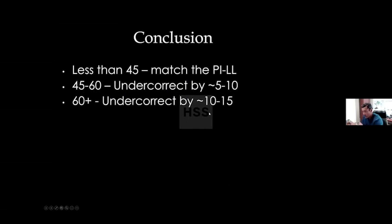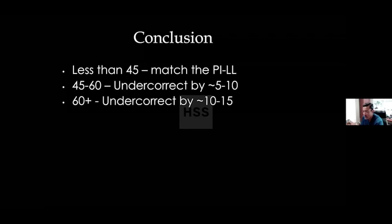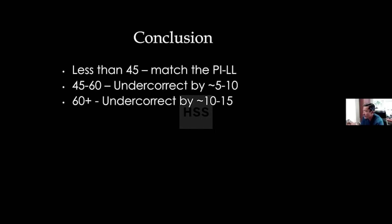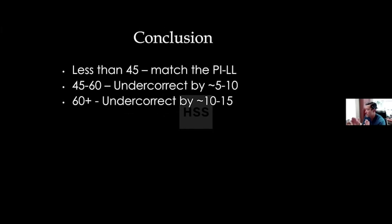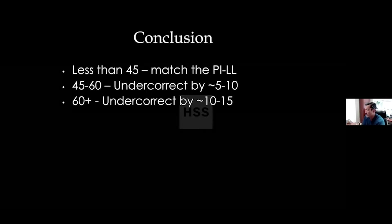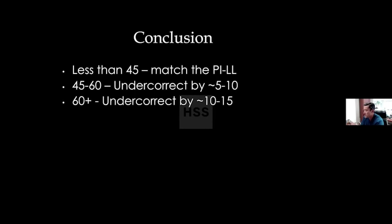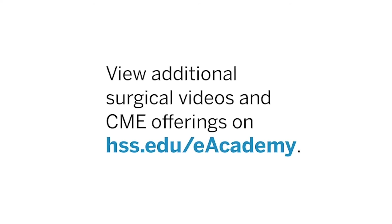In conclusion, I'm being strict about utilizing age-adjusted parameters. For anybody under 45, I try to match PI to lumbar lordosis. For 45 to 60, I undercorrect by 5 to 10 degrees in the PI-LL mismatch. For anybody over 60, I undercorrect by even more — 10 to 15 degrees. It's important to understand that although I gave age cutoffs, it's really a spectrum. For somebody who's 70, I might target 17 to 18 degrees of undercorrection. That's all I have to share. Thanks.